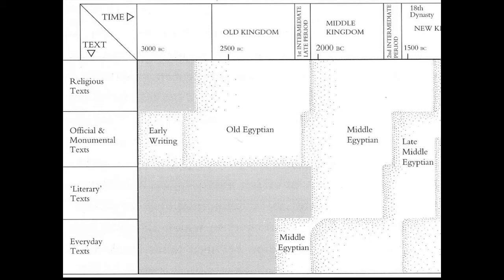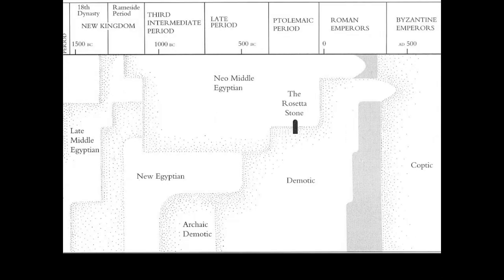Moving into the New Kingdom, in the late New Middle Kingdom we have New Egyptian, Neo-Middle Egyptian, and Archaic Demotic, again beginning as everyday texts. Eventually Demotic took over and became the language until it was completely supplanted by Coptic, which came in with the Byzantine emperors.